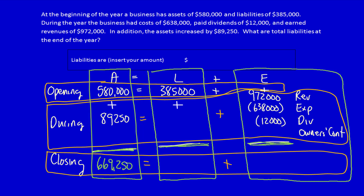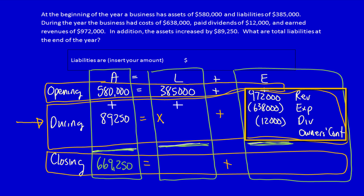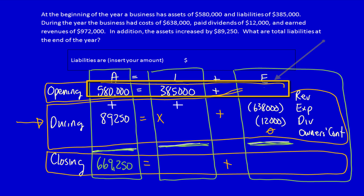For liabilities, I don't know what happened during the year, but I can calculate it using the row. However, instead of doing that right away, I'm going to solve for opening equity first: $580,000 minus $385,000 is equal to $195,000. Since they didn't mention owner contributions, the assumption is it's zero.